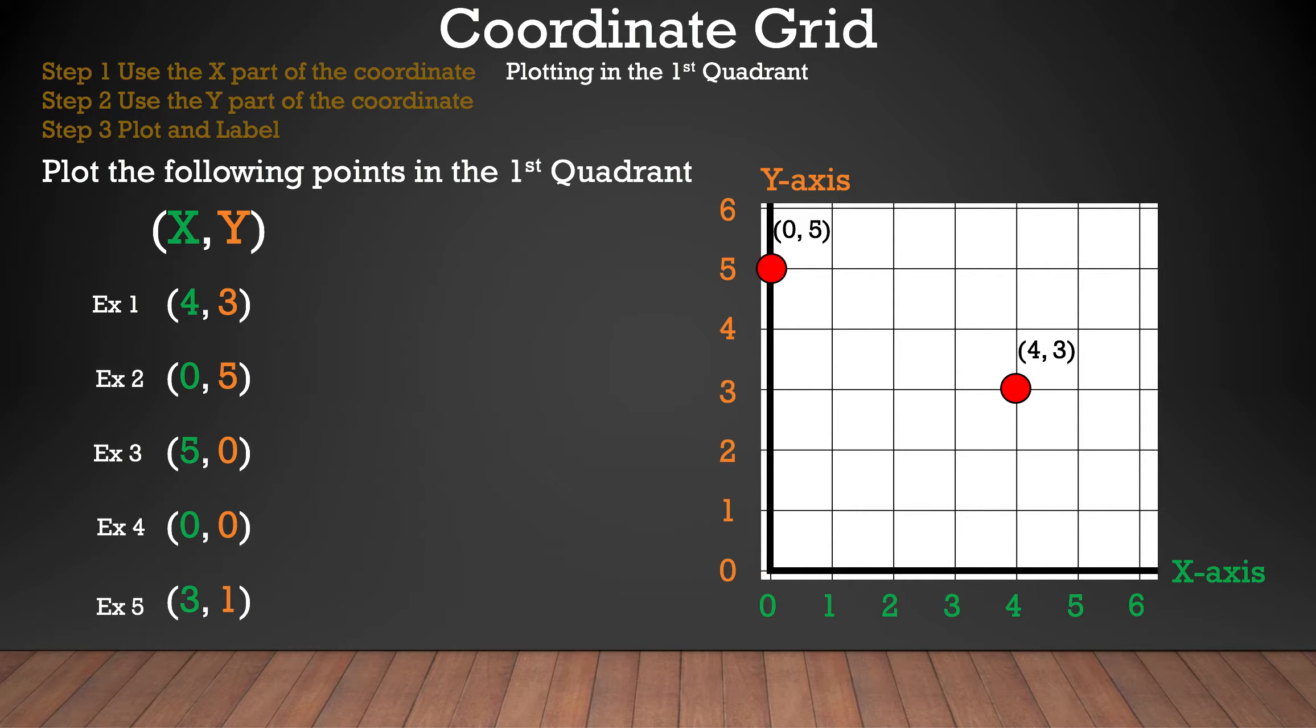Now we're going to take a look at example number three. We're going to move five spaces to the right. And since the zero is for the Y, we're not going to go anywhere. So we plot and label, and we're done with example three.